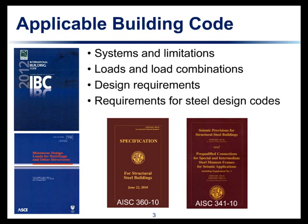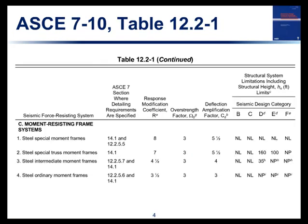To summarize: the specification is 360, the seismic provisions is 341, and the pre-qualified connections is 358. The 2010 versions of the AISC documents are referenced in the 2012 IBC and ASCE 7-10, and in the 2015 IBC as well. From the building codes come the loads, the load combinations, some system requirements such as the use of amplified seismic load combinations, and also guidance on where you can use the different types of seismic force resisting systems.